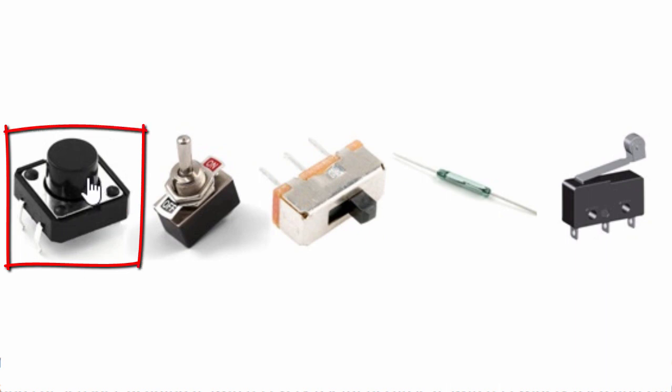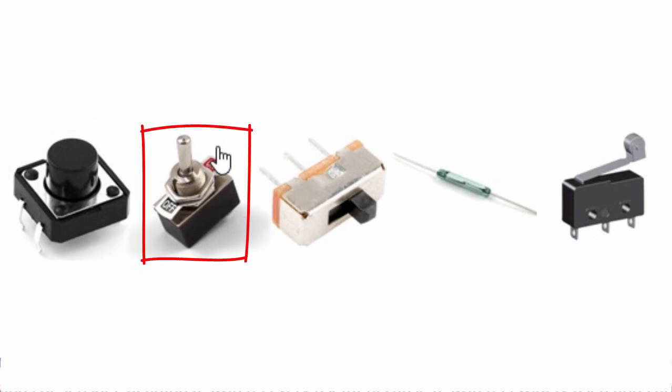Switches come in various forms for different purposes. This is a push button. It makes contact when pushed and breaks contact when released. This is a toggle switch. Moving the lever back and forth opens and closes an electric circuit.